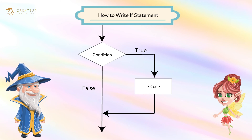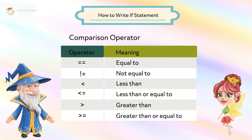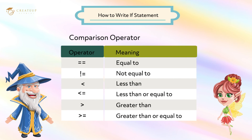How do we write a conditional expression? For conditional expressions, we use comparison operators. Comparison operators in Python, also called Python relational operators, compare the values of two operands and return true or false based on whether the condition is met. There are six types: equal to, not equal to, less than, less than or equal to, greater than, and greater than or equal to.